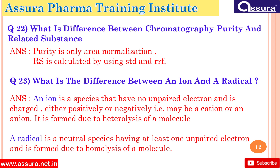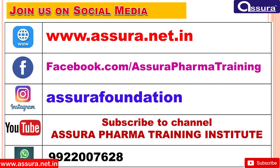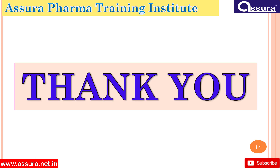What is the difference between an ion and a radical? An ion is a species that has no unpaired electrons and is electrically charged, either positively or negatively. It is formed due to heterolysis of a molecule. A radical is a neutral species having at least one unpaired electron and is formed due to homolysis of a molecule. Hope you liked this video. For more video notifications, join us on Facebook, Instagram, YouTube, and WhatsApp. Thank you for watching.